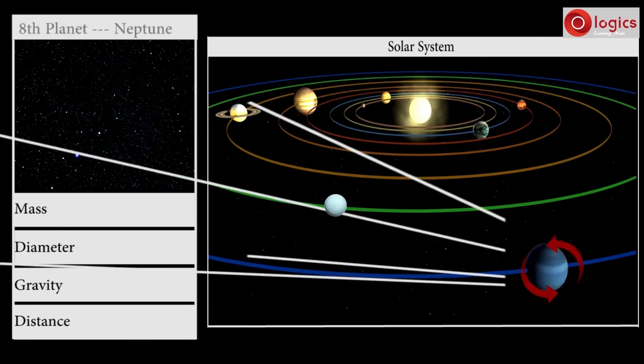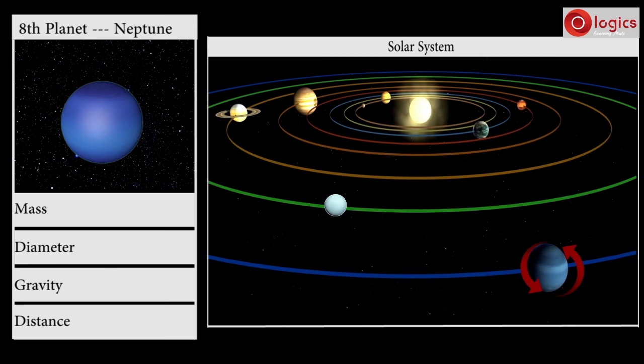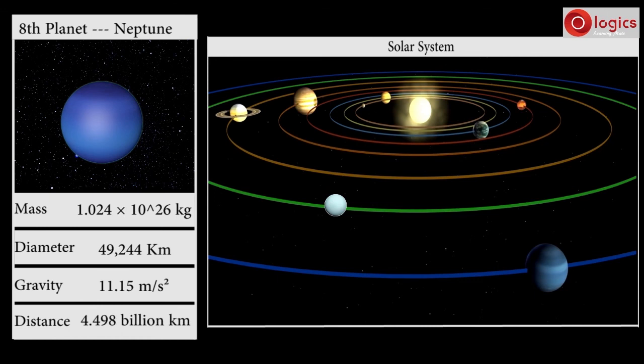The eighth planet in our solar system is Neptune. Neptune's mass is 1.024 × 10^26 kilograms. Neptune's diameter is 49,244 kilometers. Gravity on Neptune is 11.15 meters per second squared, and distance of Neptune from the Sun is 4.498 billion kilometers.